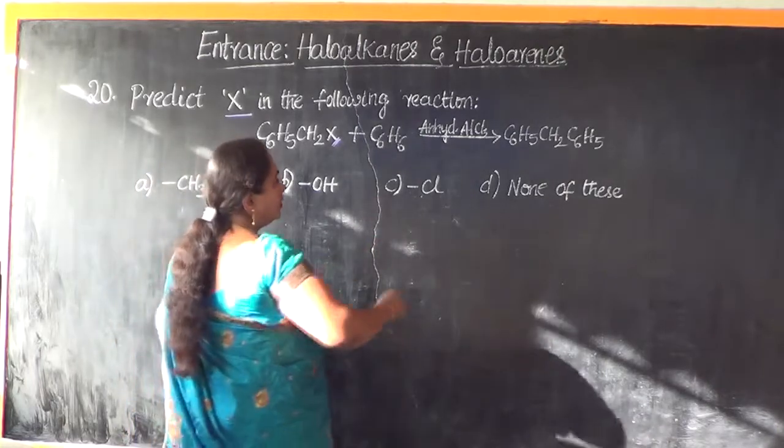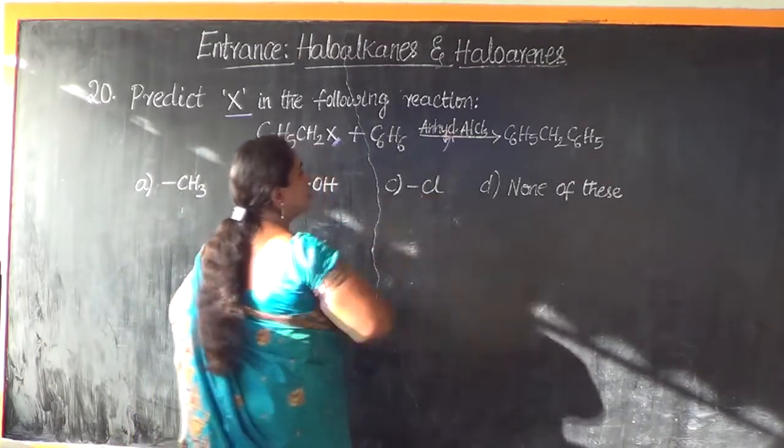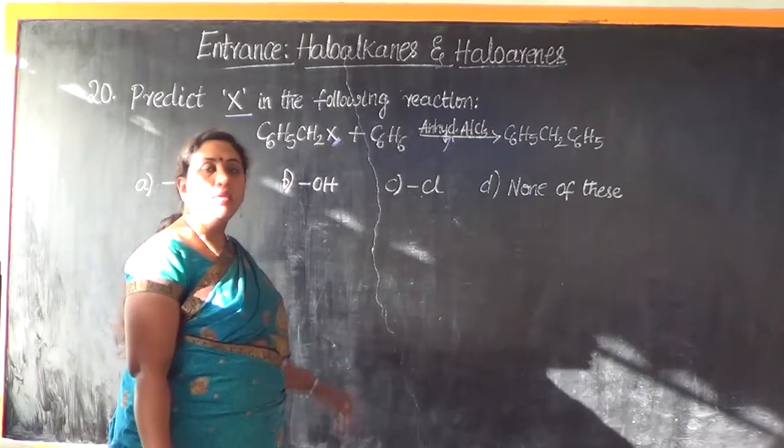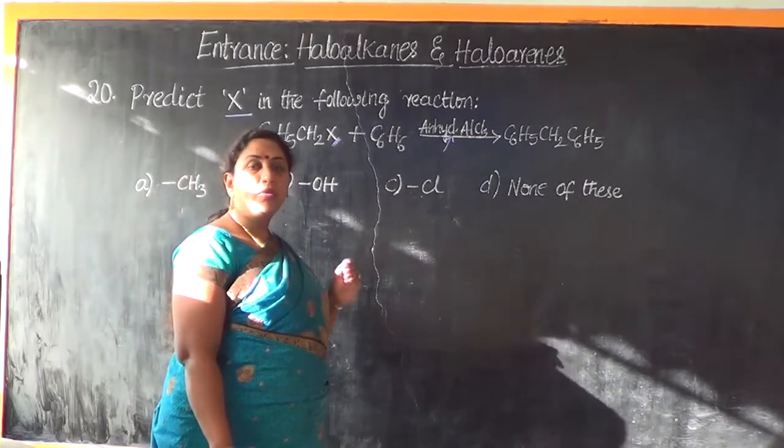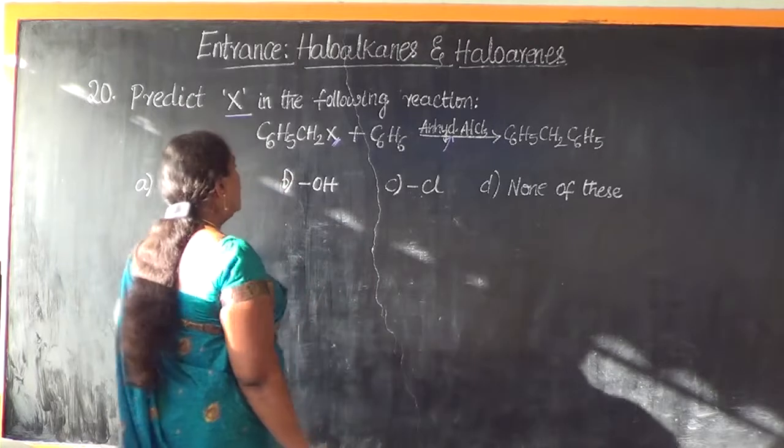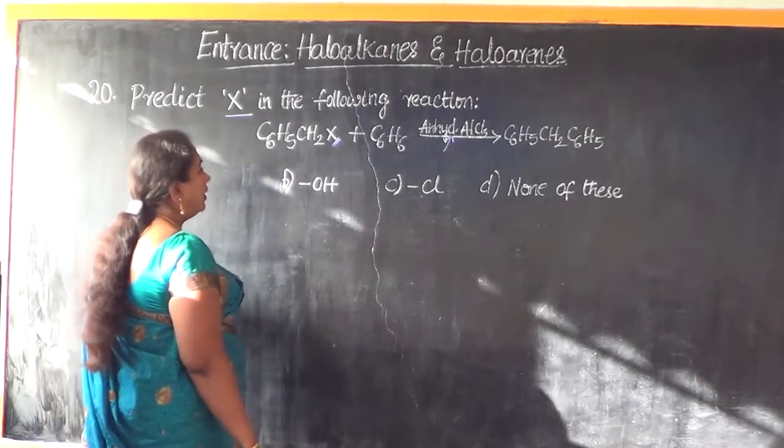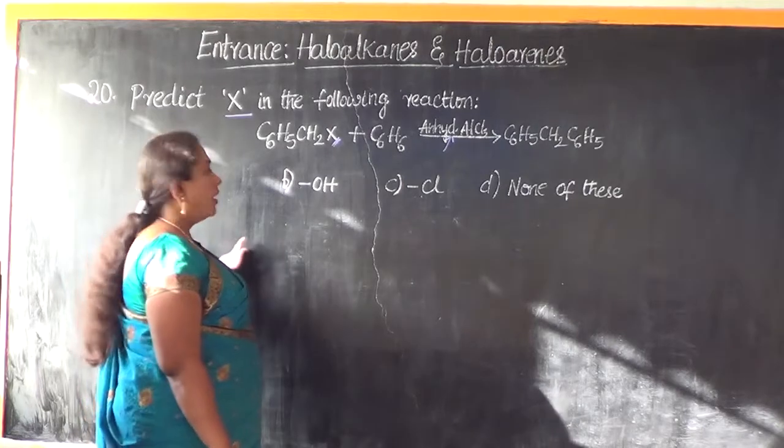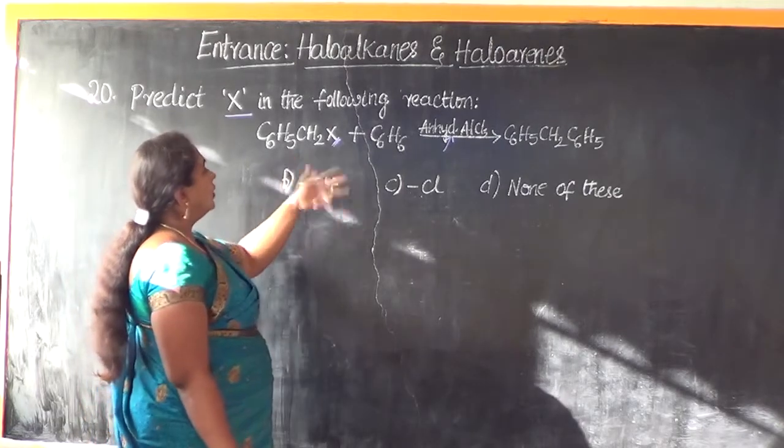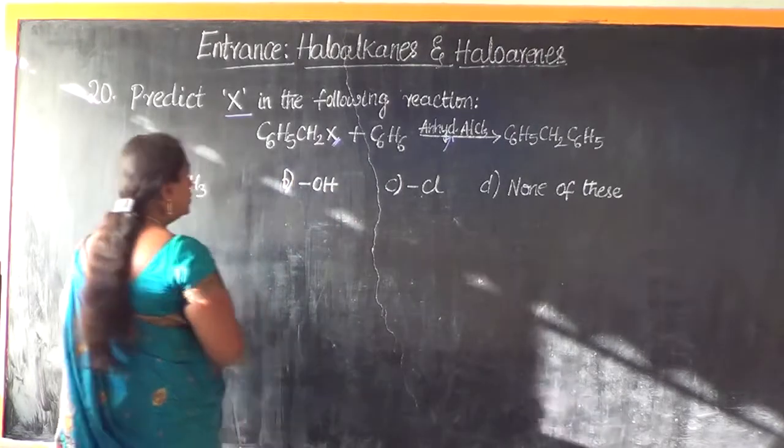One more method to identify is, the catalyst given to us is anhydrous aluminium chloride. That means we are talking with respect to Friedel-Crafts reaction. So, if Friedel-Crafts reaction has to be there, it should be an alkyl halide or an aryl halide. That means the X should definitely be a halogen.